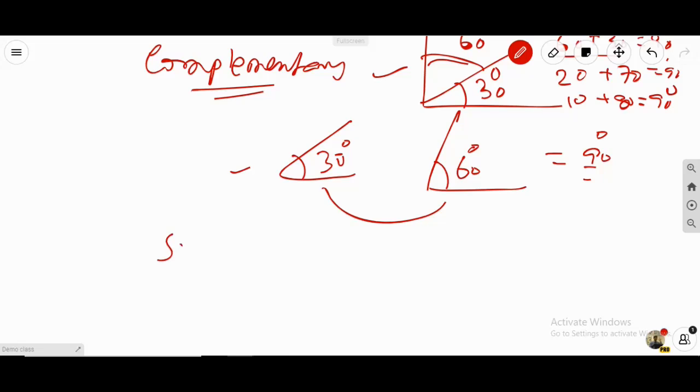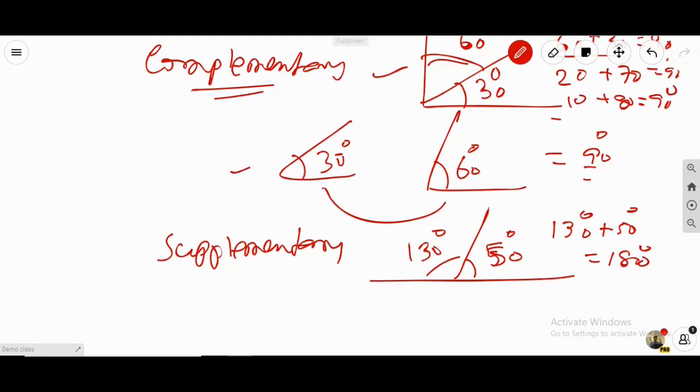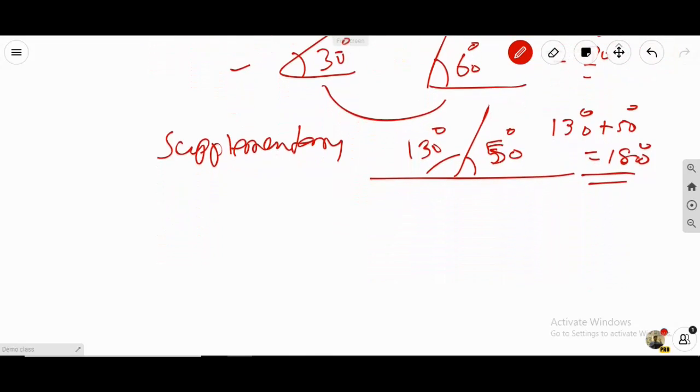Again, when you talk about supplementary angles, they have to add up to 180 degrees. Let's say this is 50 degrees and this is 130 degrees. So 130 plus 50, they add up to 180 degrees. We could get a number of combinations that will add up to 180. It could be 120 plus 60 or 90 plus 90 or 130 plus 50.